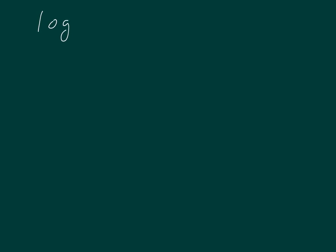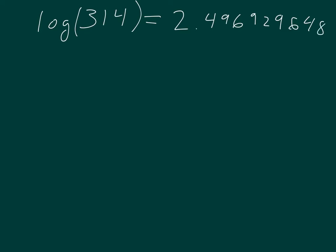Let's take the log of 314. We punch log 314 into our calculator and our calculator gives us 2.496929648. Obviously, if you know nothing about sig figs, this is still way too many sig figs — this is indeed a calculator lie.